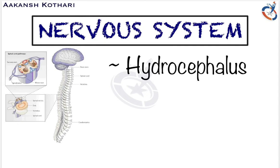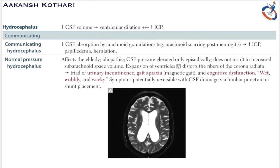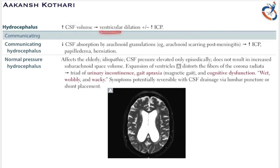Questions on hydrocephalus can be directly asked or can come as a symptom of other diseases, so this is a very important integration with multiple systems as well as the pathologies of the nervous system. Hydrocephalus means increase in the CSF volume or cerebrospinal fluid volume and the dilatation of the ventricles. Whenever there is an increase in CSF which produces ventricular dilatation with or without increase in the intracranial pressure, it is called hydrocephalus.